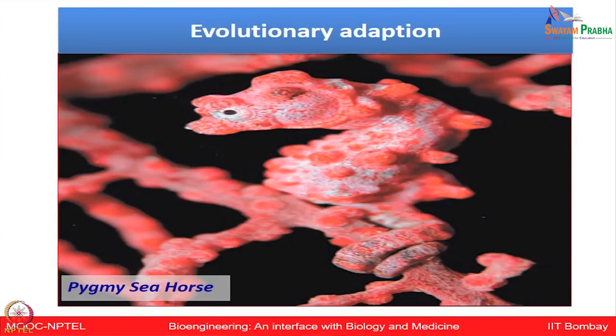Let us look at this pygmy sea horse, which provides an example of evolutionary adaptation. The appearance of this pygmy sea horse is pretty much camouflaging its environment, as you can see in the red colour. Such adaptations evolve over many generations and actually become part of the hereditary — that is part of Darwinism, which we will talk about later: how positive changes best suited to the environment can become hereditary and pass from one generation to the next.